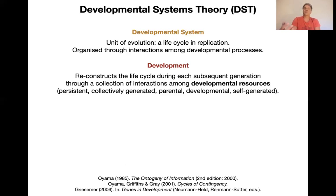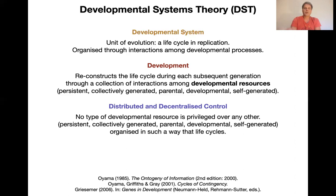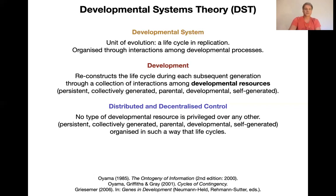These resources are not just genes — they are very diverse. They can be persistent, collectively generated, or parental-development-itself generated. Distributed or decentralized control is very important here. Developmental systems theorists strongly reject the idea that genes are special. This is called the parity thesis: different resources have equally important causal contributions to make. No type of developmental resource is privileged over any other in principle.